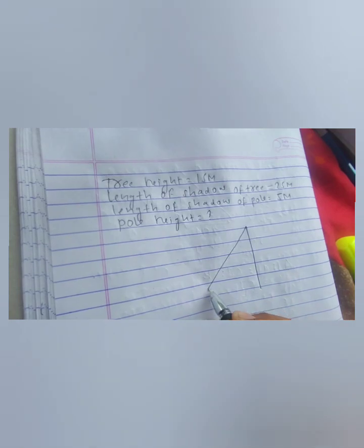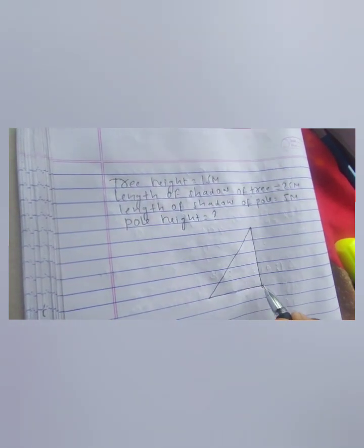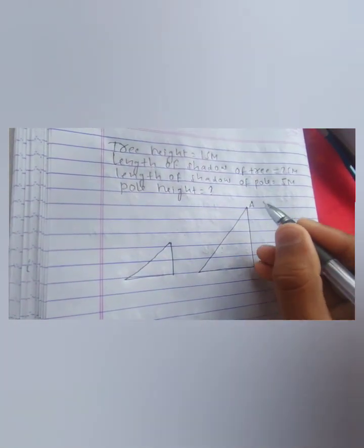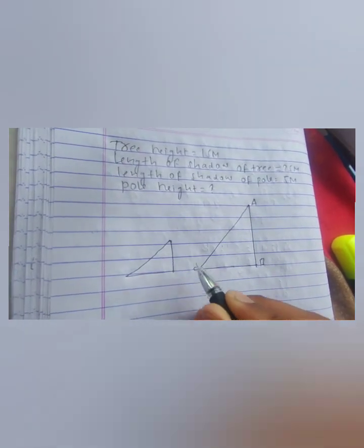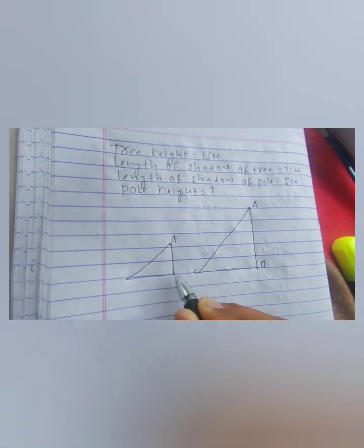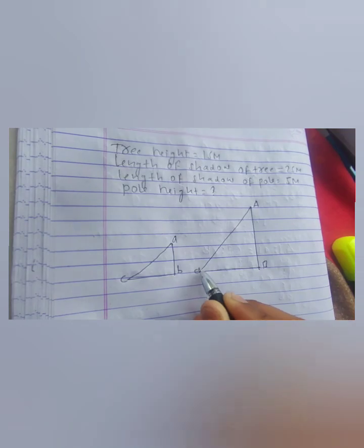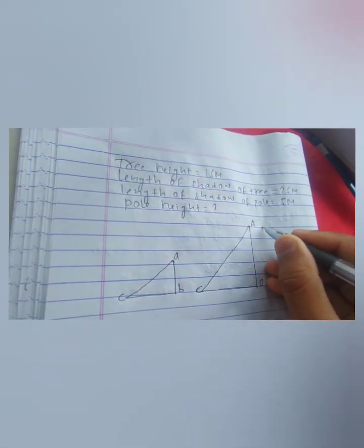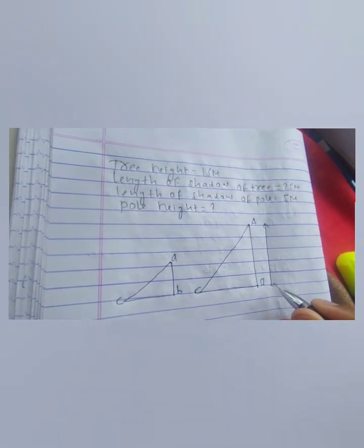The big triangle is for the tree and the small triangle is for the pole. I'm labeling them with symbols ABC (capital) and abc (small letters). The tree height is 15 meters, so I'm marking the tree height as 15 meters.